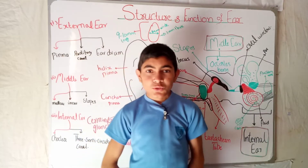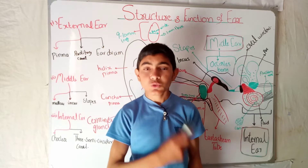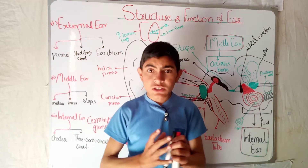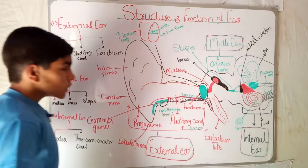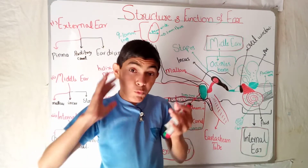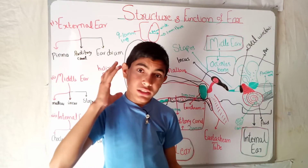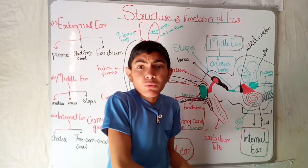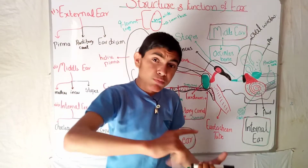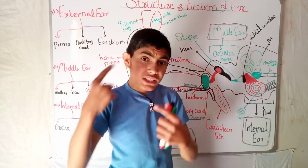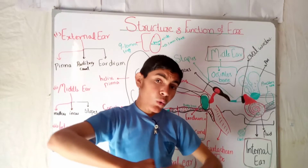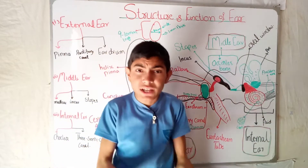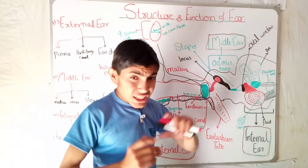Today my topic is about the sensory receptor - the structure and function of the ear, which is a sensory organ for hearing. The ear is a complex organ that helps us hear sounds coming from all directions. When someone calls us, this stimulus comes to our ear and our ears process this information and send it to our cerebrum, which produces a response.